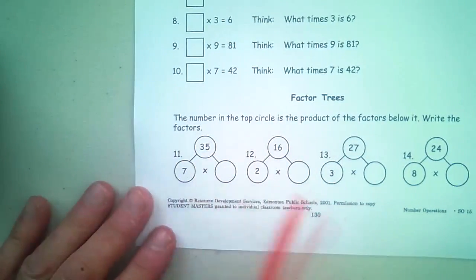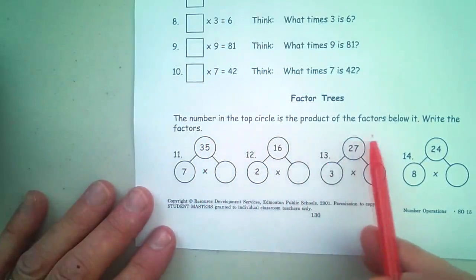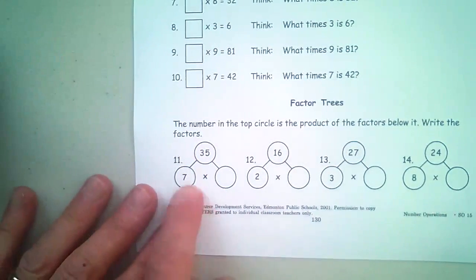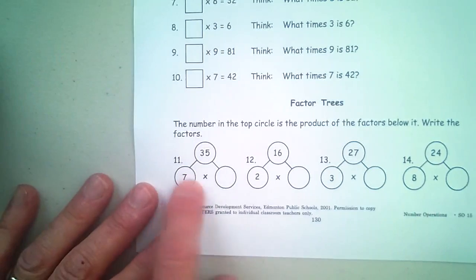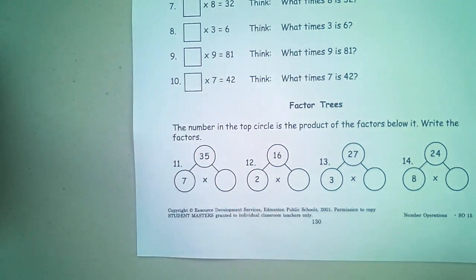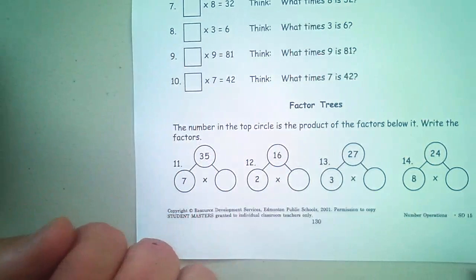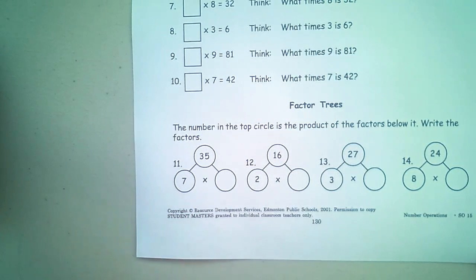And here, they have the top number of the circle is a product of the factors below, right? The factors. And once again, you know that 7 times what is 35. And then you're showing that's how division works. Division is just going one way and coming back the other way with multiplication. All right. Until next time.